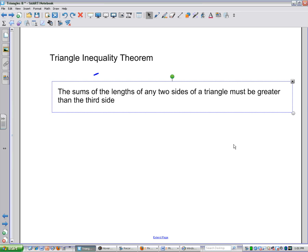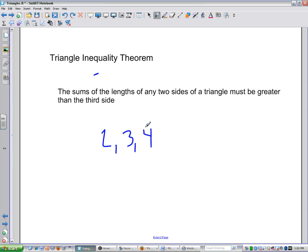That's the triangle inequality theorem. Okay, so if I have a triangle, let's just pick some numbers here at random. If I have two and three and four, that will work because two plus three is bigger than four. Three plus four is bigger than two. Two plus four is bigger than three. Largely, you're looking at comparing the two shorter sides to the third side. If I had two, three, and seven, that's not going to work because two plus three is not bigger than seven.